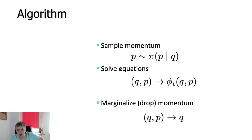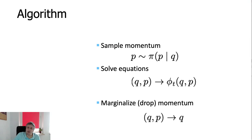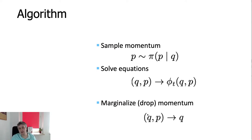Our algorithm is to sample momentum from the conditional probability distribution of momentum given positions. We start with a point in our probability space — our parameters — and using that point we get a random sample of momentum. Then we use our initial point Q and P — the previous value of parameters plus randomly generated momentum — to solve the system of differential equations to get new points at the end of the trajectory. We can then marginalize out the momentum simply by dropping it, going from the vector of parameters and momenta to just a new vector of parameters.